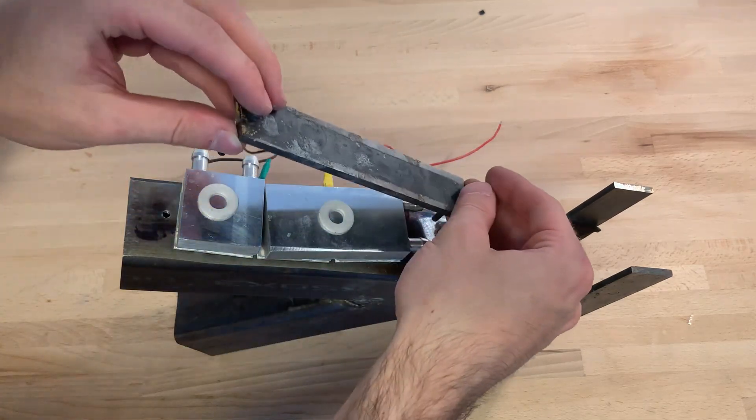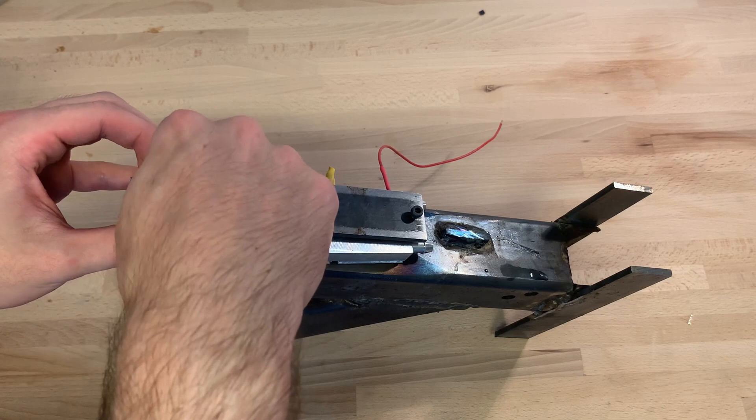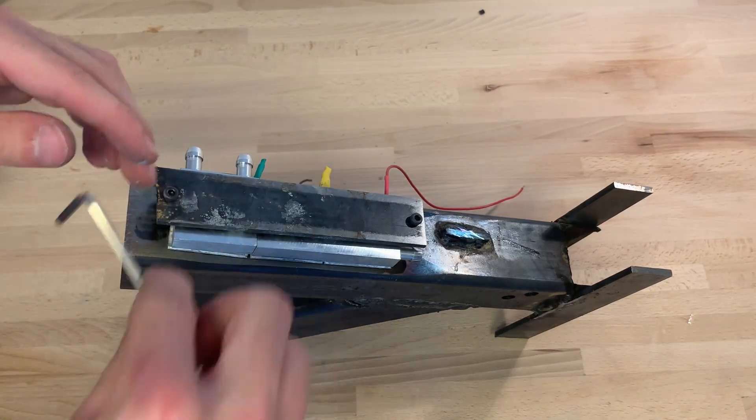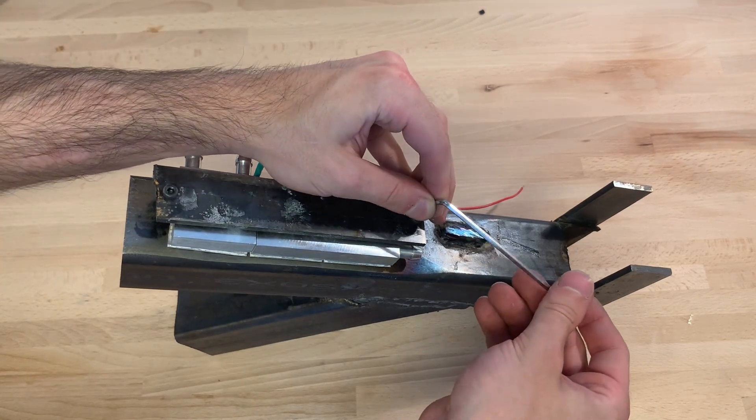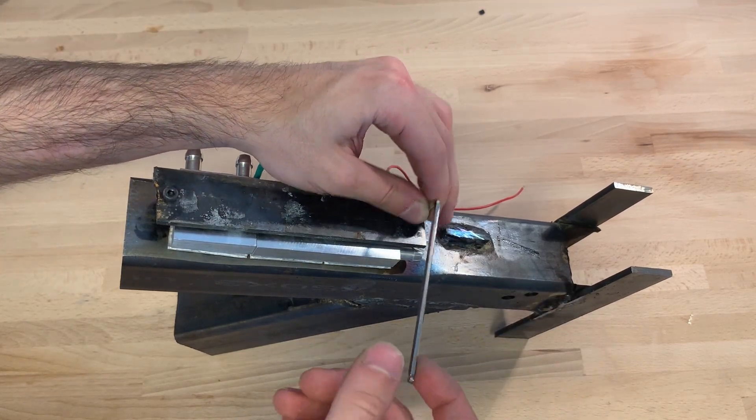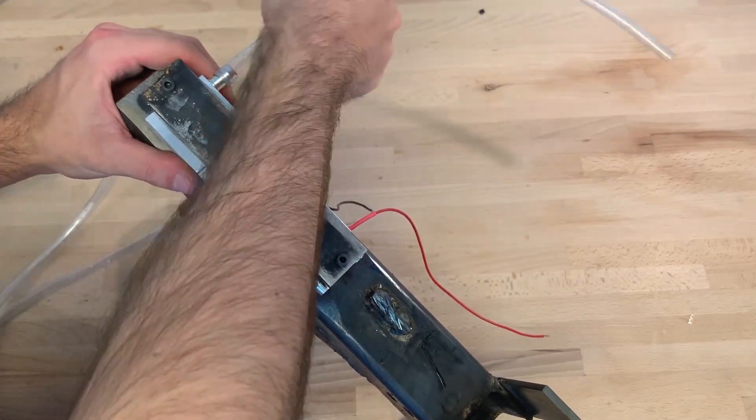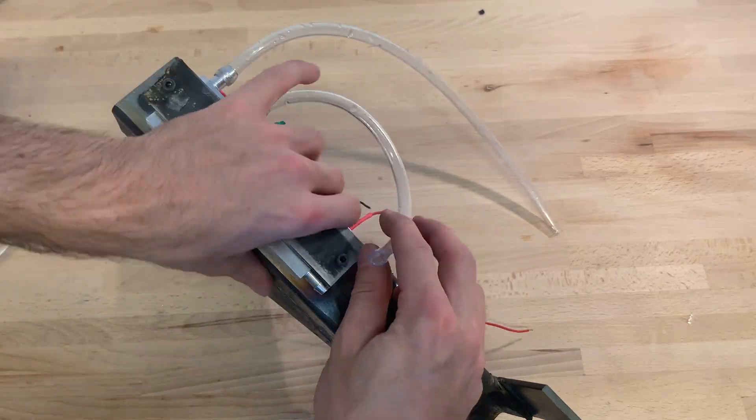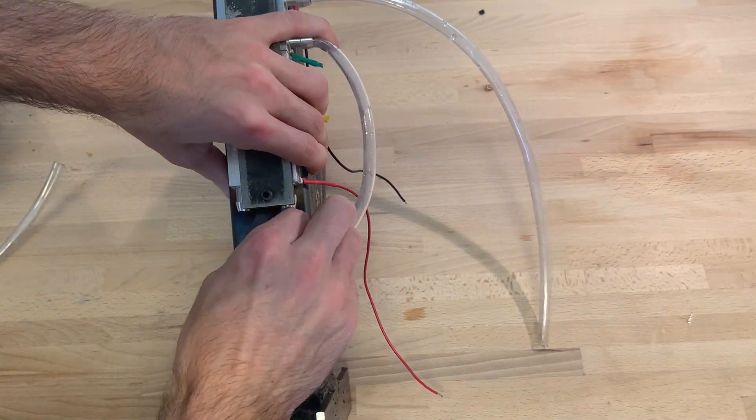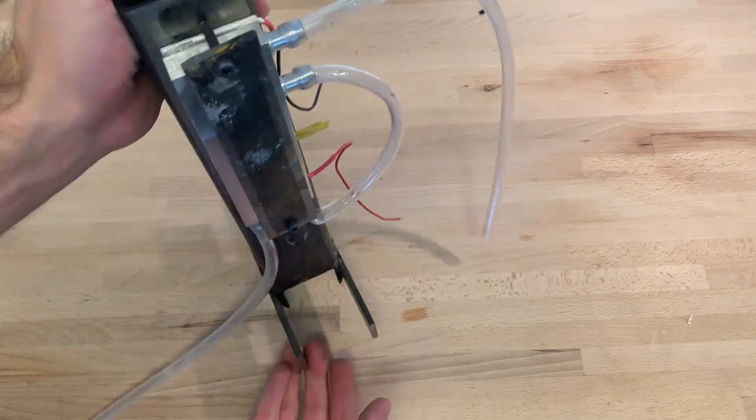I used two plastic spacers here to ensure the clamping force was perpendicular to the blocks. The water blocks are then connected in series.